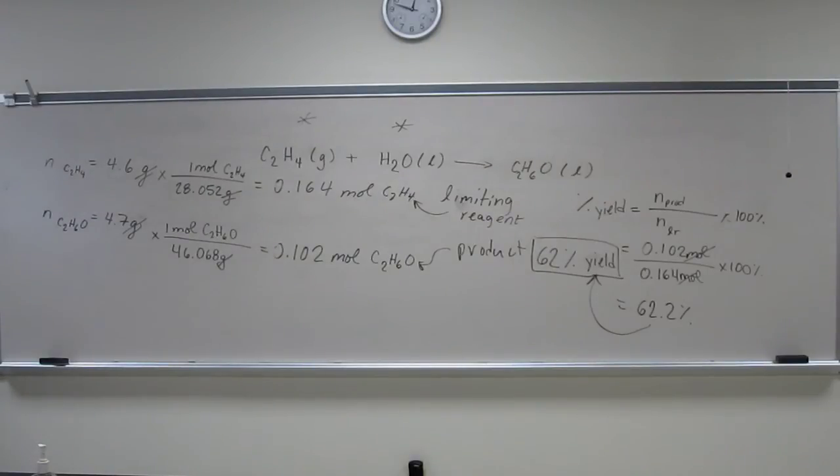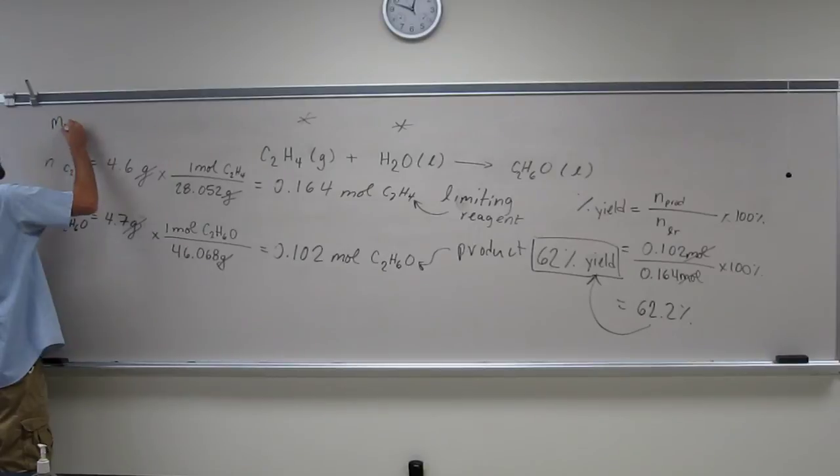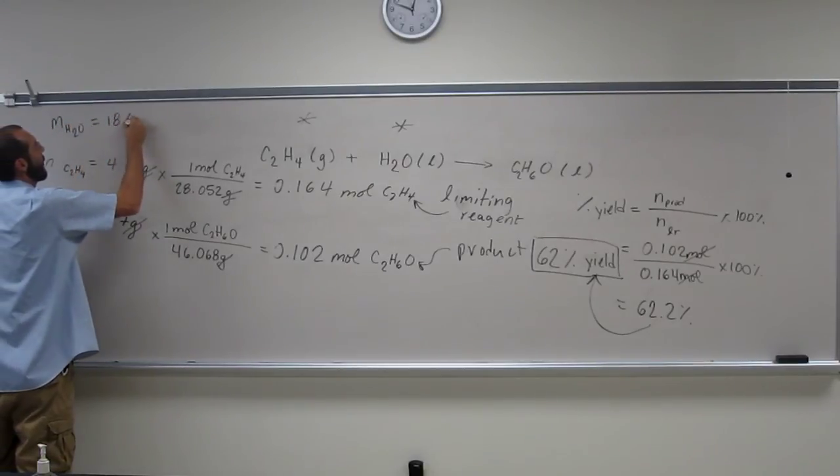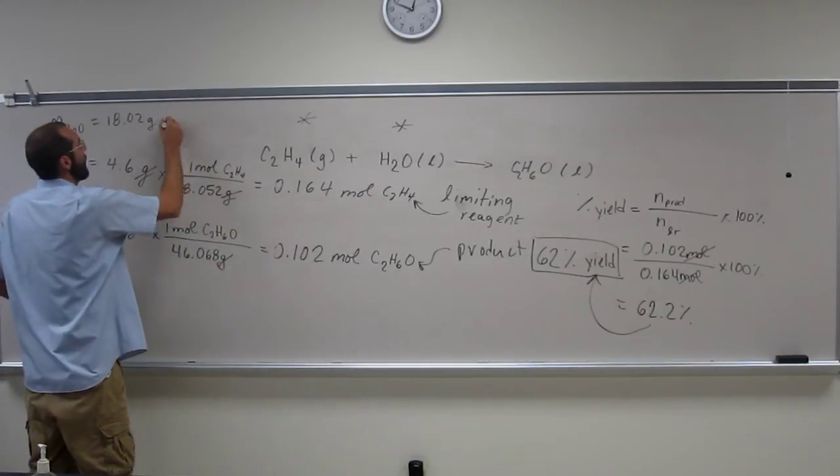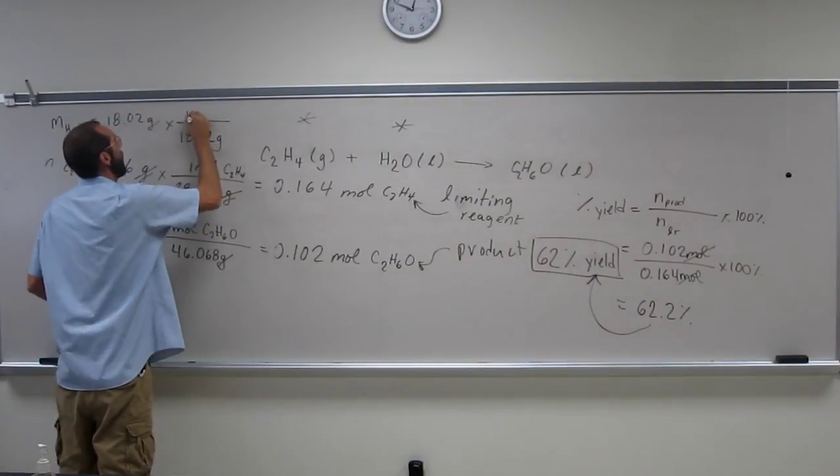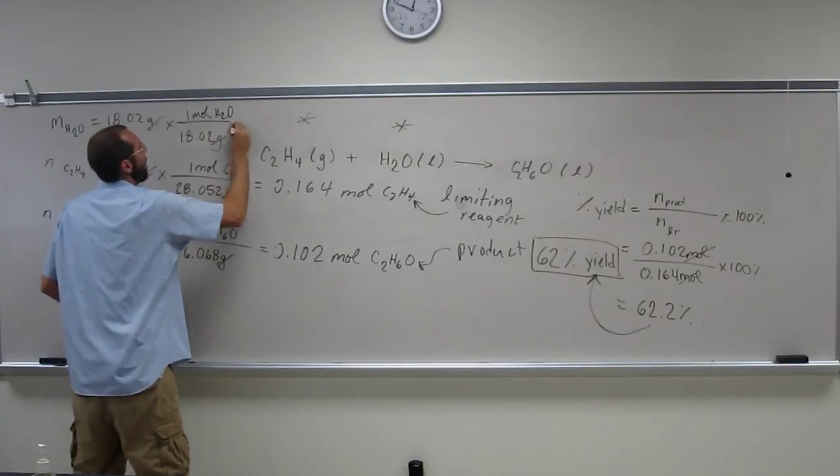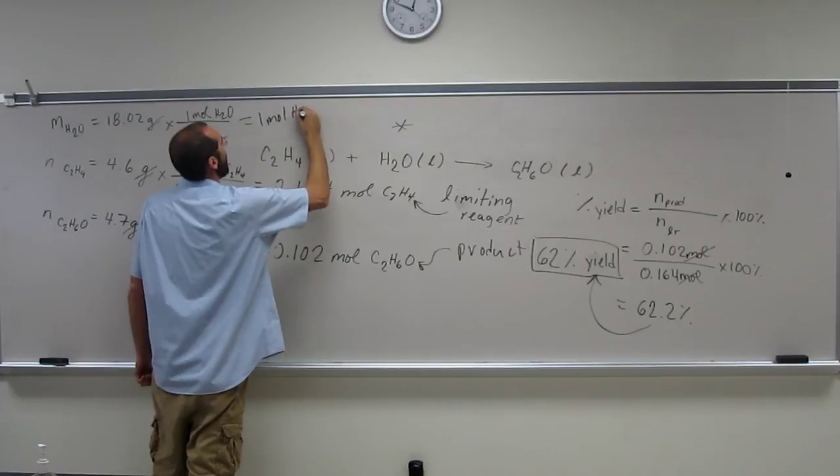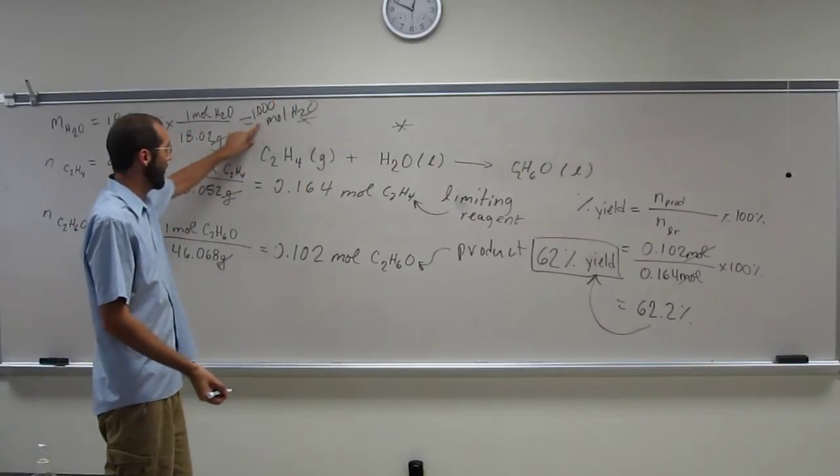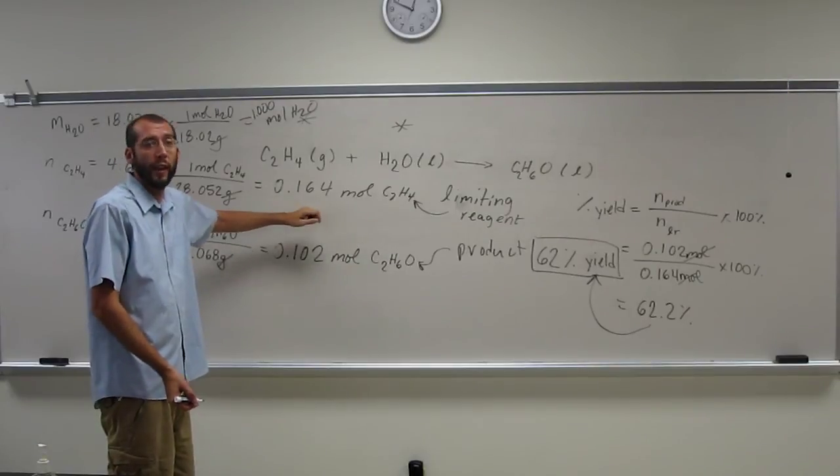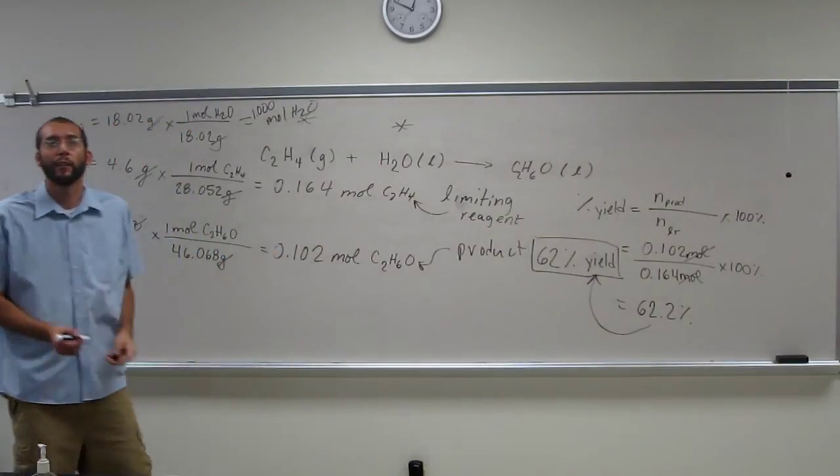So if you had like multiple reactants, you'd have to figure out what the limiting reagent is, right? So if in this case it said the mass of water is, I don't know, 18.02 grams, then you'd have to use that to see if that's the limiting reagent. Would it be the one with the least amount of moles? The least amount of moles. So if I compare that to that, which one's less? The ethylene, right? So that's still the limiting reagent. Does that make more sense now? Yeah. Okay, good.